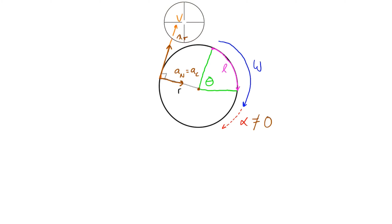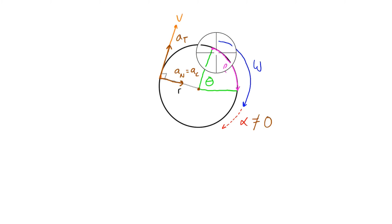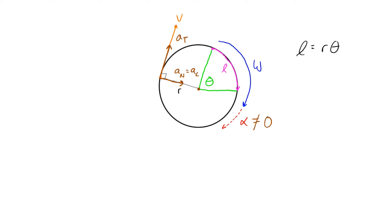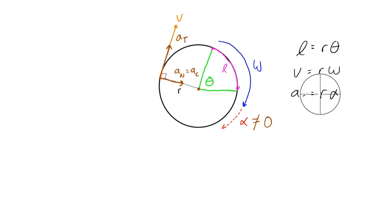Let's not focus on normal acceleration in this video — we'll cover that in the next one. For the equations: the arc length is l = rθ, which we've seen in previous videos. The expressions for tangential velocity and tangential acceleration are also straightforward: tangential velocity v = rω, and tangential acceleration at = rα. These all show that the linear quantity is simply the angular displacement, velocity, or acceleration multiplied by the radius — the distance out from the point we're rotating about.